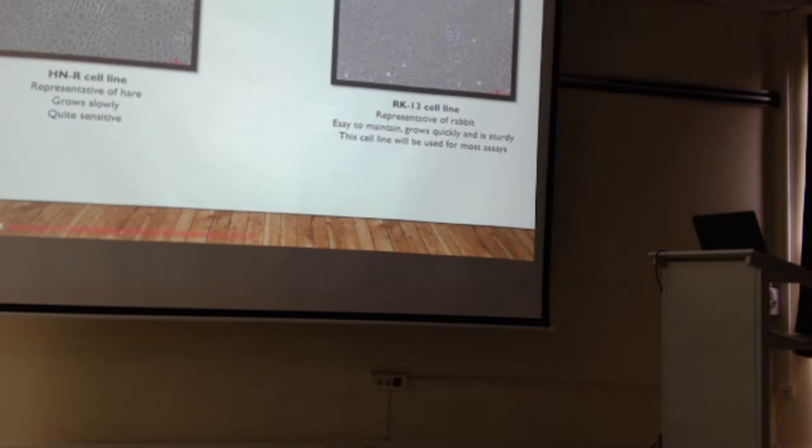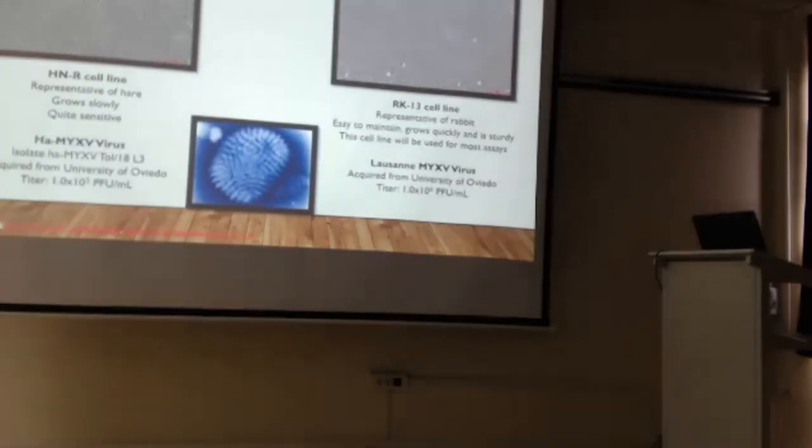On to the cell lines. To do these experiments, we needed models that were representative of both the previous and the new host of this virus. The new host, which is the hare, is represented by the HMR cell line. And then we have the rabbit cell line, the RK13 cell line, representing the previous host, which is the rabbit.